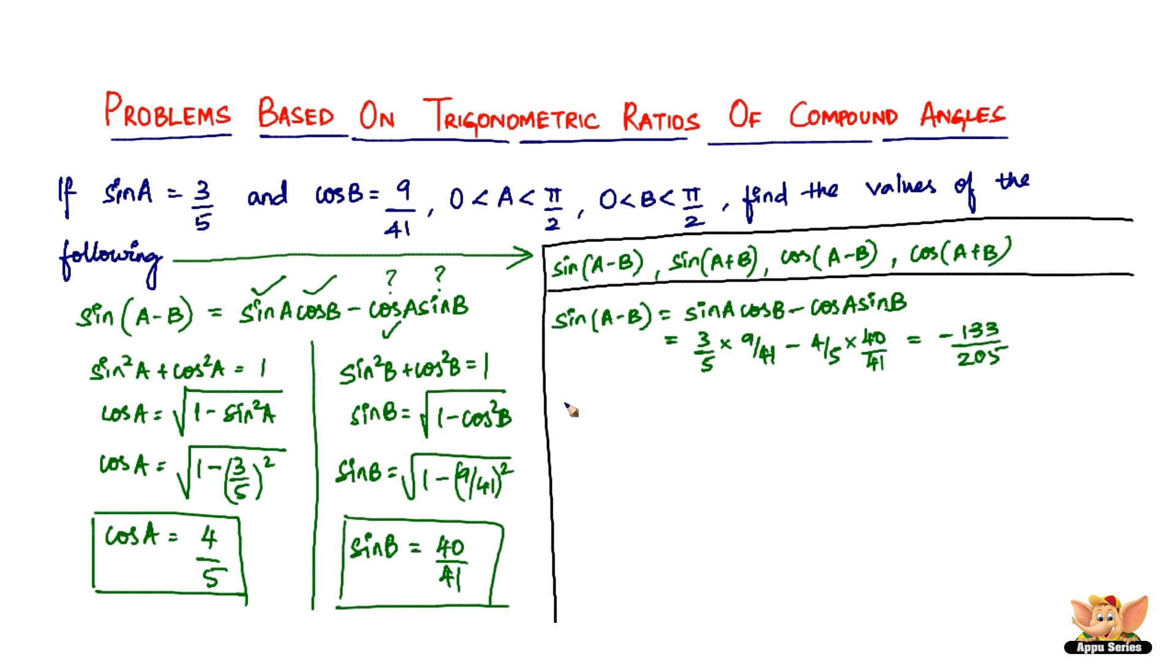The next one is sin A plus B. Sin A plus B is the same formula with the positive: sin A cos B plus cos A sin B. Of course, the final answer is going to change. We have 3 by 5 into 9 by 41 plus 4 by 5 times 40 by 41, which gives you 187 divided by 205.